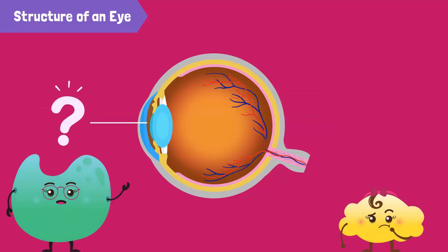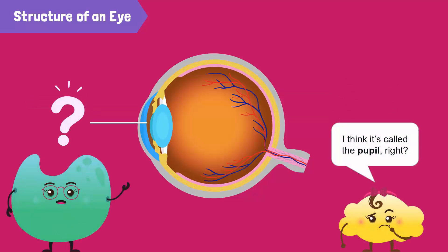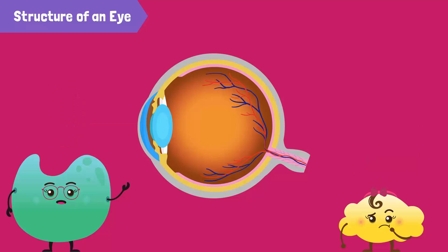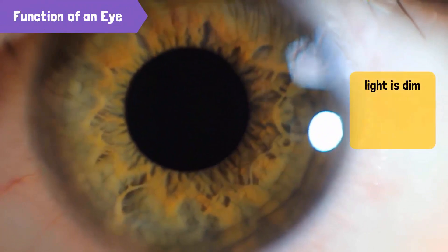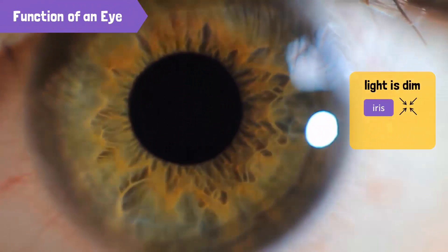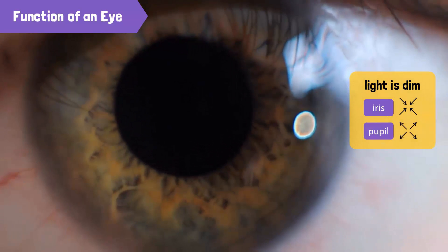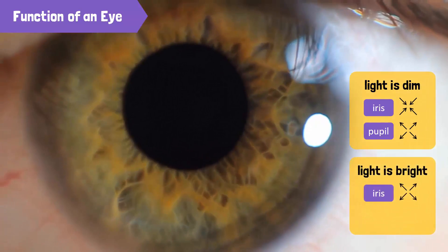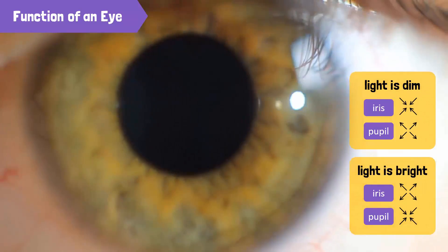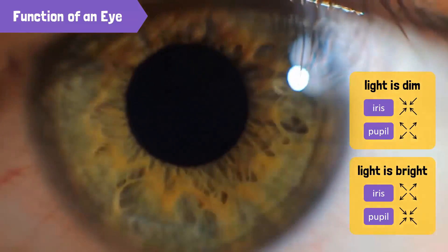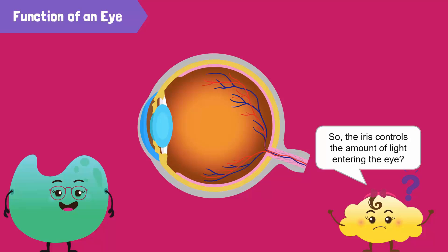Do you know what this part is called? I think it's called the pupil. Right? Actually, the colored part of your eye is called the iris. The opening at the center of the iris is called the pupil. When the light is dim, the iris contracts and the pupil becomes larger, so that more light can enter the eye. And when the light is bright, the iris expands and makes the pupil smaller, so that less light can enter the eye. So the iris controls the amount of light entering the eye.